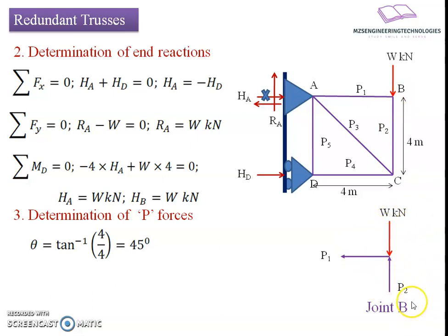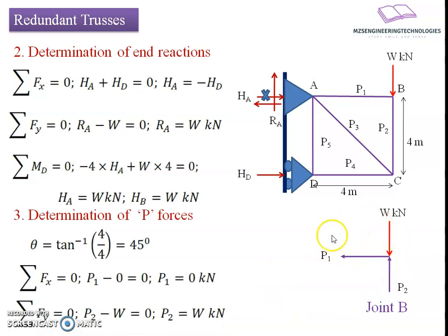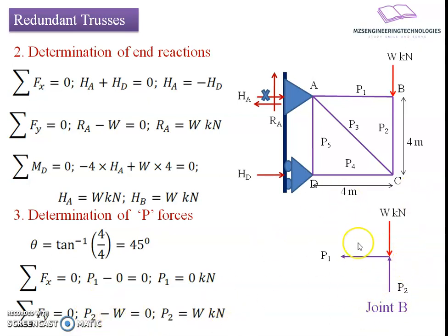At joint B, the free body diagram has three forces: W kilonewton acting downward, P2 in member BC, and P1 in member AB. Applying static equilibrium: summation of Fx equals 0 gives P1 equals 0 kilonewton — member AB carries zero force. For the vertical direction, P2 minus W equals 0, so P2 equals W kilonewton compressive — member BC carries W kilonewton in compression.